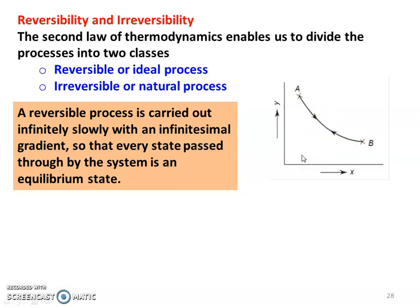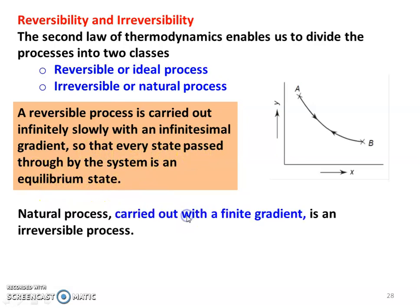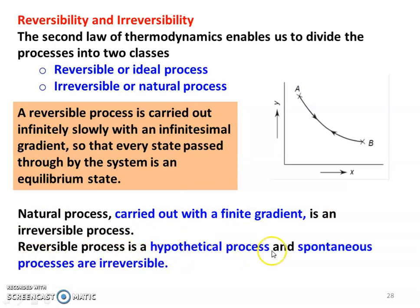But practically, there is no reversible process. All processes are irreversible or natural processes. A reversible process is carried out infinitely slowly with an infinitesimal gradient — a very, very small gradient — so that every state passed through by the system is an equilibrium state. All thermodynamic processes are very fast, so a reversible process is a hypothetical or theoretical process. Spontaneous processes are irreversible processes.